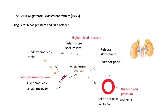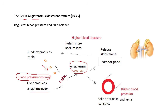If your blood pressure is too low, your kidneys produce a substance called renin. Your liver produces angiotensinogen. The renin breaks the angiotensinogen down into angiotensin. The angiotensin does a couple of things. One thing it does is tell your blood vessels to constrict — to become narrower. If your arteries become more narrow, that is going to increase your blood pressure.